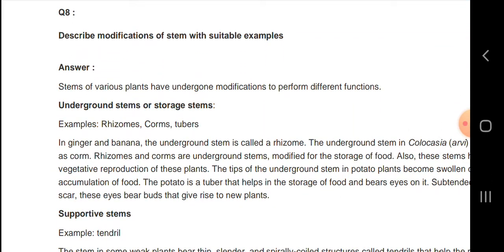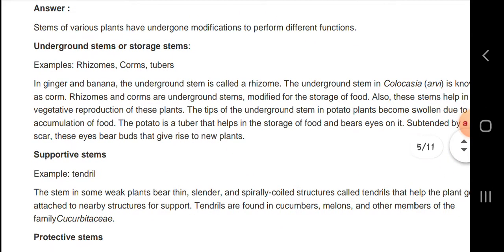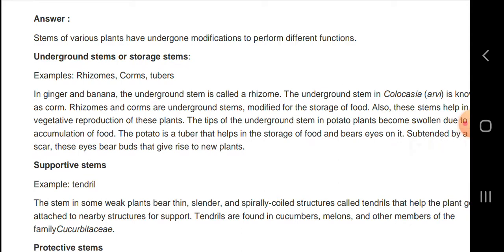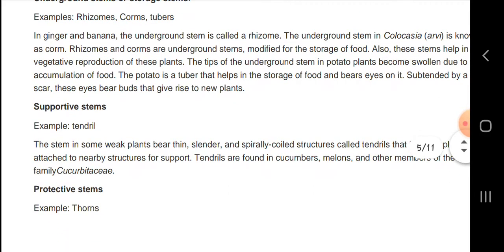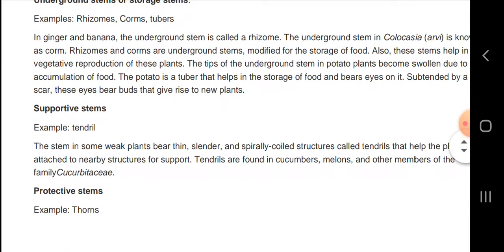Stems of various plants have undergone modification to perform different functions. Underground stems are storage stems. In gingers and bananas, the underground stem is called rhizome. Some stems are support type stems. The stems in some weak plants bear thin, slender, and spirally coiled structures called tendrils.